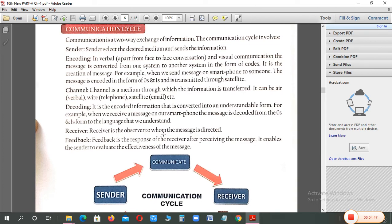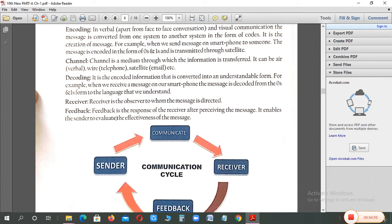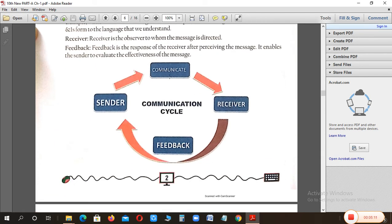Receiver, receiver us message ko observe karega, read karega, jab uske paas message pahunch jata hai. Feedback, feedback ek response hota, jo receiver, message ko receive karne ke baad mein, apne views ko deta hai. It enables the sender to evaluate, the effectiveness of the message. Yeh batata hai, message kitna effective hai, kya usmein koi problem hai, message achche se pahunch aaya, complete hai, anything feedback mein, kuch bhi ho sakti hai. Dekho, communicate, sender se start hoti hai, communicate karta hai, sender receiver se, receiver feedback isko wapas bhejta hai, sender ko, isko kehte hain, communication cycle.